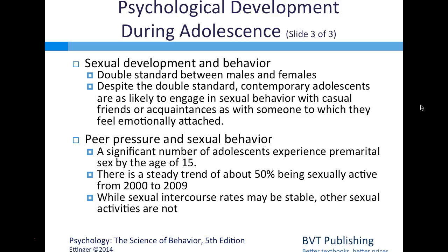A significant number of adolescents experience premarital sex by age 15. Nationwide surveys reveal a strong upward trend beginning in the 1950s through the 80s, a decreasing trend through the 90s, and a steady rate of about 50% being sexually active from 2000 to 2009. Surveys at the author's institution show a much higher rate, with about 80% of students becoming sexually active by age 19. There is also accumulating evidence that adolescents under age 15 are engaging in intercourse and other sexual activities in increasing proportions.